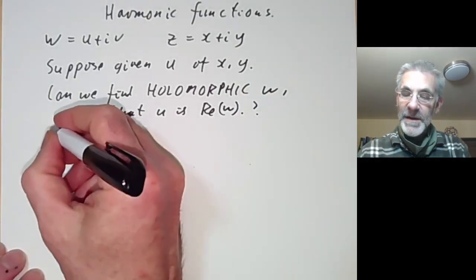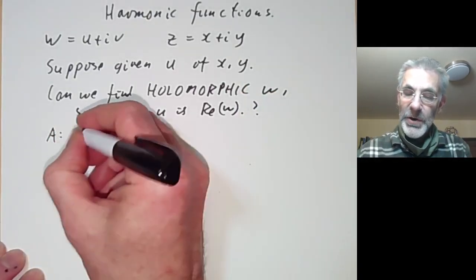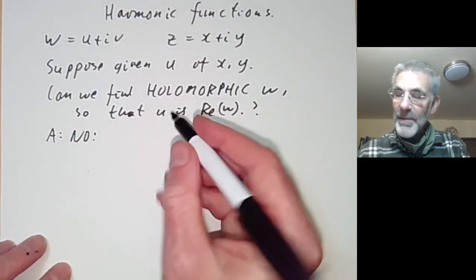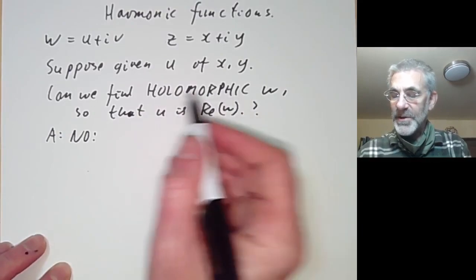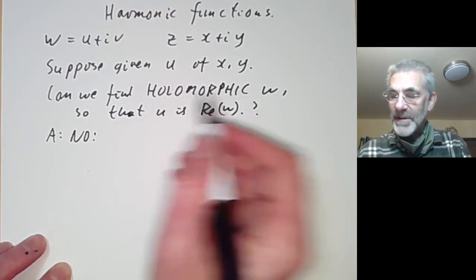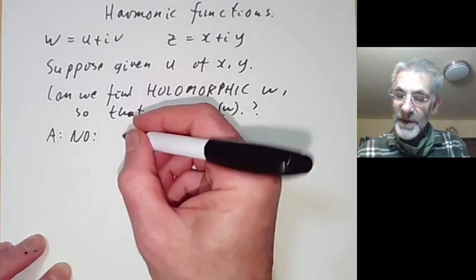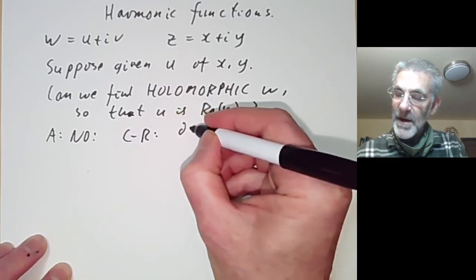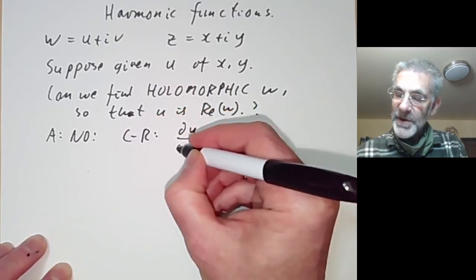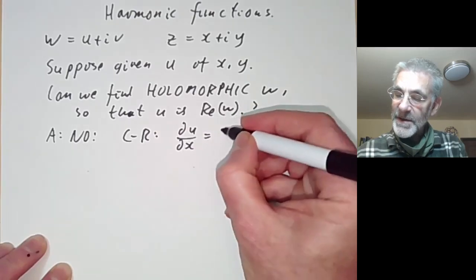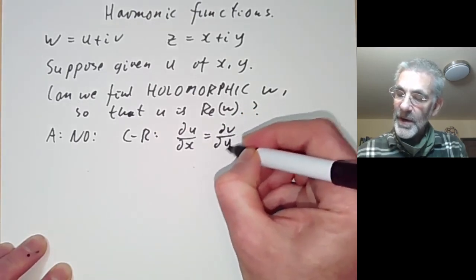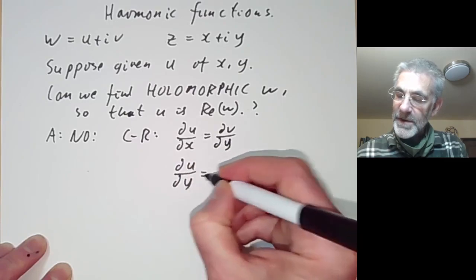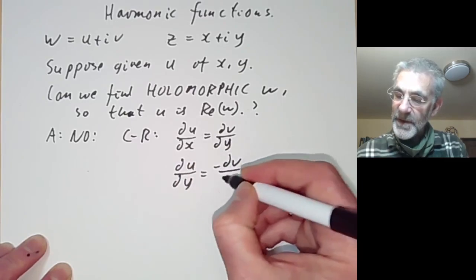The answer is in general no, because there's an obstruction. If w is holomorphic — meaning it has a complex derivative — then it satisfies the Cauchy-Riemann equations: the partial derivative of u with respect to x equals dv/dy, and du/dy equals minus dv/dx.